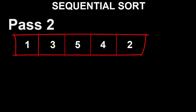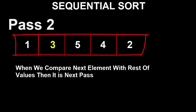Then we shall move to the next element value 3 and compare it with the rest of the numbers, that is 5, 4, 2. Here 2 is smaller than 3, therefore we exchange their positions. Now the numbers are 1, 2, 5, 4, 3.